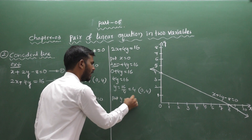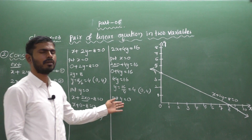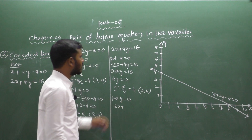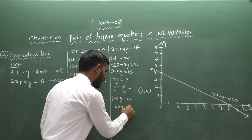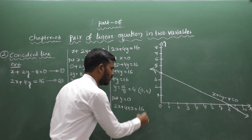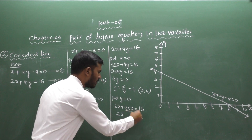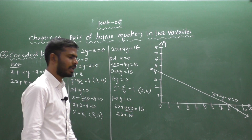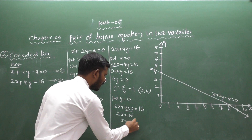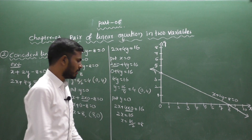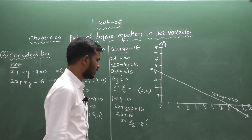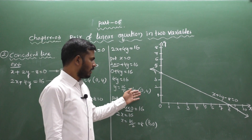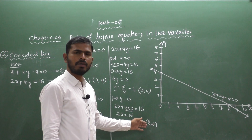Next, put y equal to 0. Substituting into 2x plus 4y equal to 16: 2x equal to 16, so x equal to 8. The second solution set is (8, 0). So we get the same two points: (0, 4) and (8, 0).